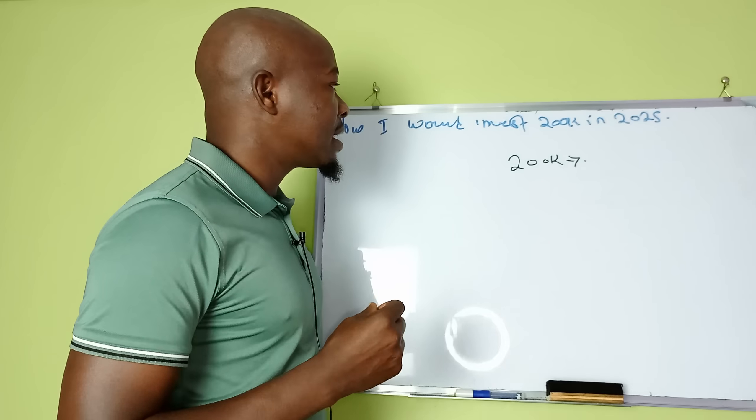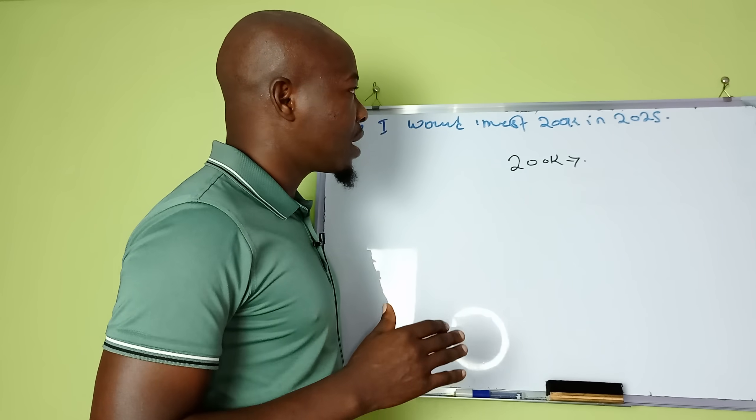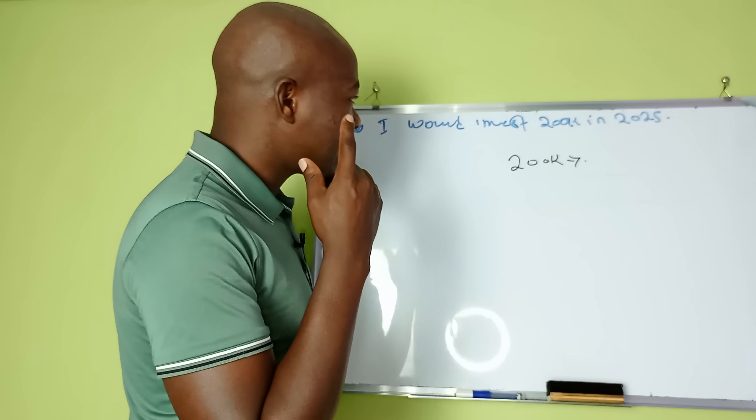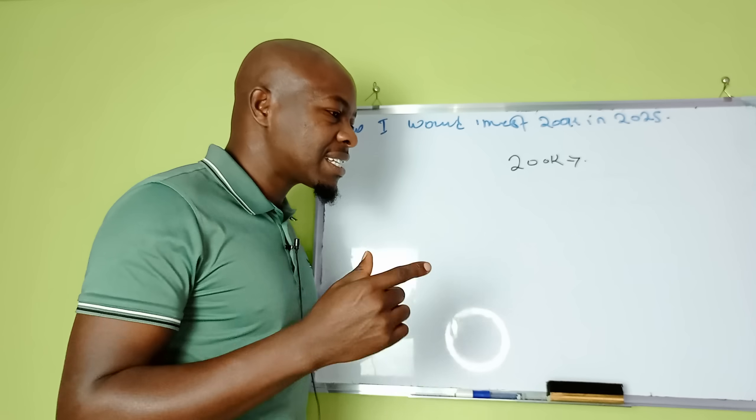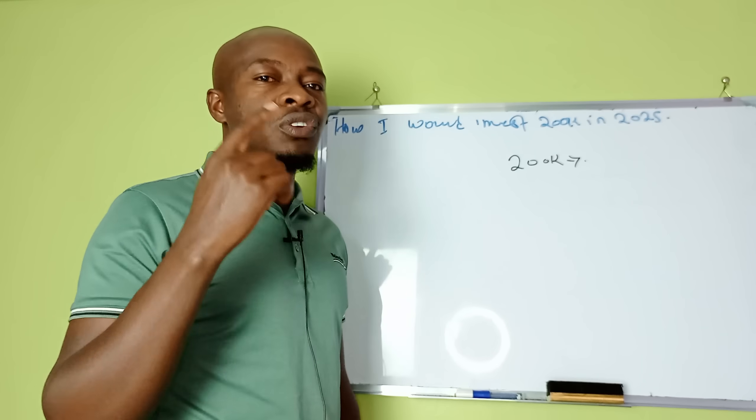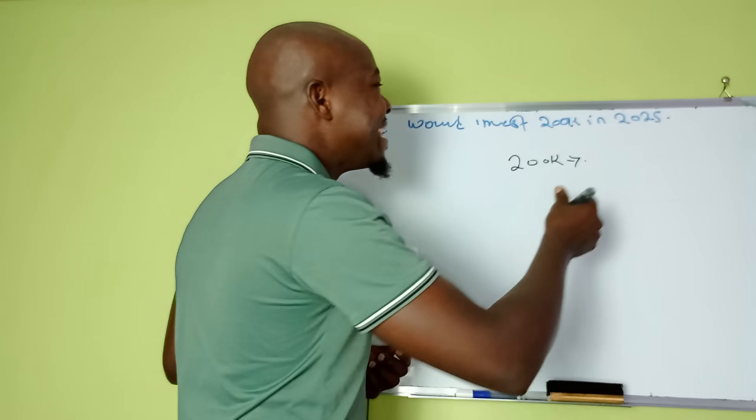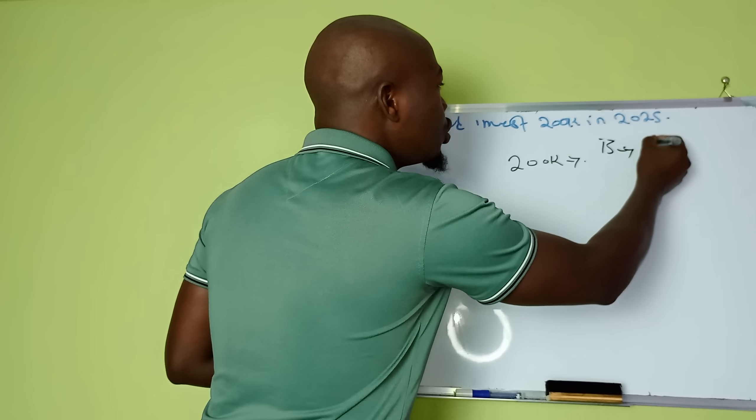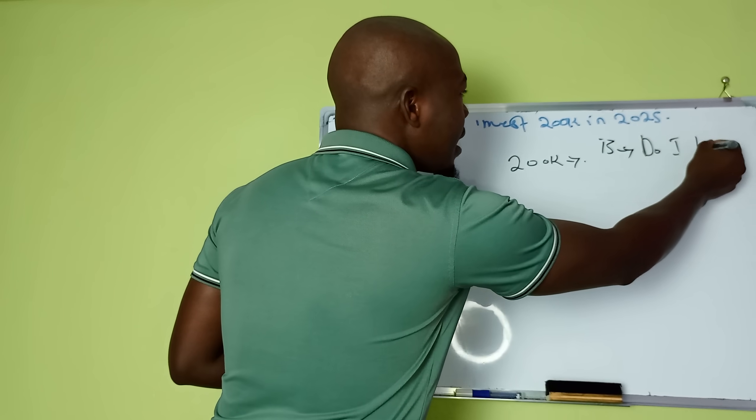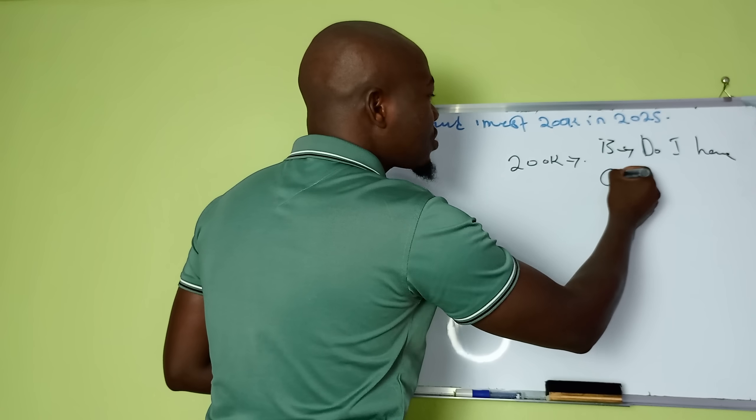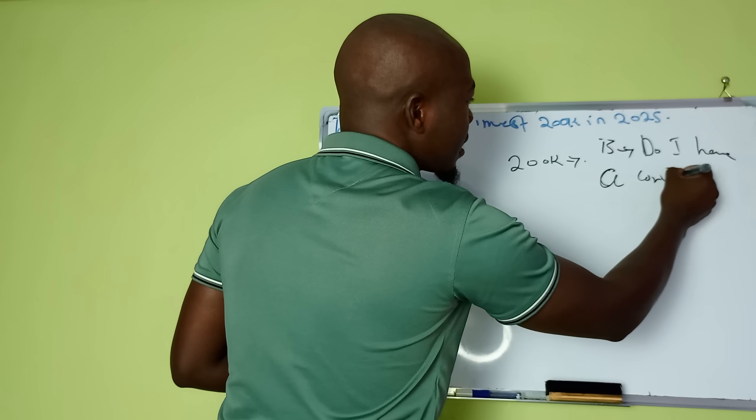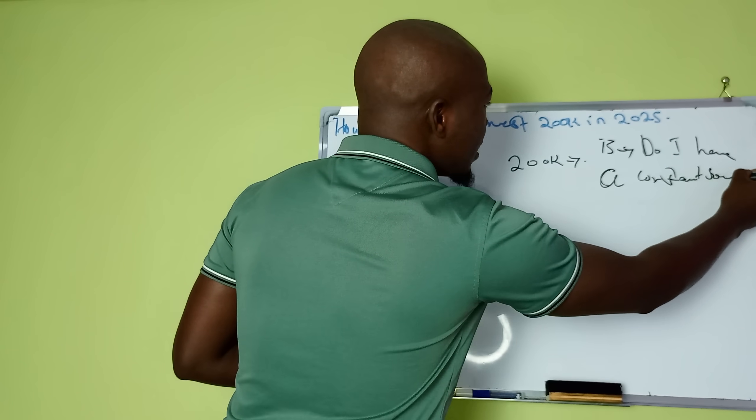Here we are. Our budget is 200,000. This is the money that we have. And this is exactly how I would invest. So if I have this particular amount of money, first of all, the first question I would ask myself, even before thinking about investing, is do I have a constant source of income?